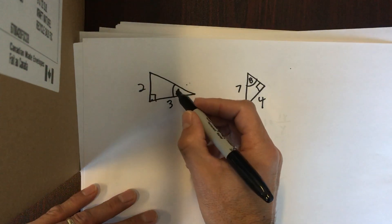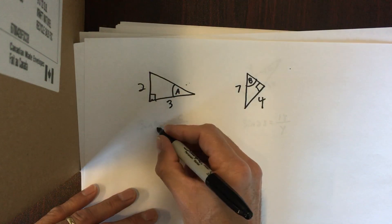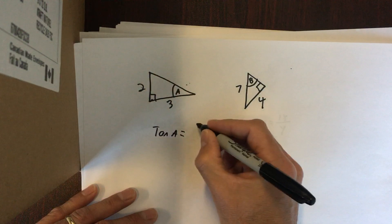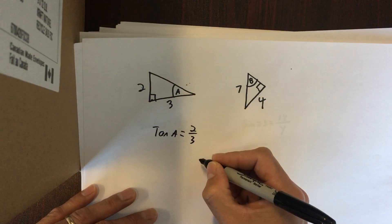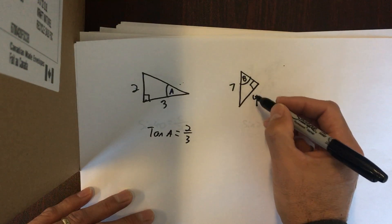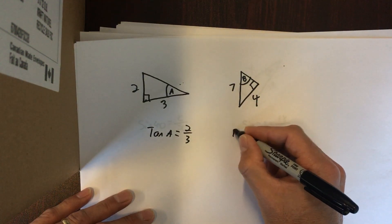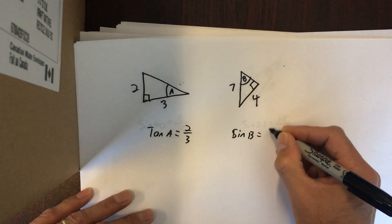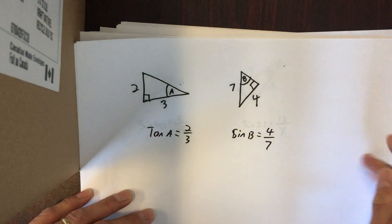Why don't you press pause and see if you can set up these two. In this case we have opposite and adjacent — the tan of this angle is opposite over adjacent. In this case we have opposite and hypotenuse — the sine of that unknown angle is the opposite side over the hypotenuse.